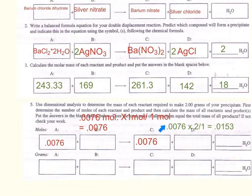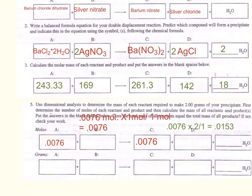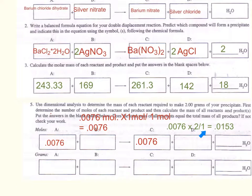Note that units were left out due to space. The full setup for silver nitrate is: 0.0076 moles of barium nitrate × 2 moles of silver nitrate / 1 mole of barium nitrate = 0.0153 moles. For silver chloride, since the coefficients are also 2 and 1 respectively, we also get 0.0153 moles. For water, with a coefficient of 2 in front and 1 in front of barium nitrate: 0.0076 moles of barium nitrate × 2 moles of water / 1 mole of barium nitrate = 0.0153 moles of water.